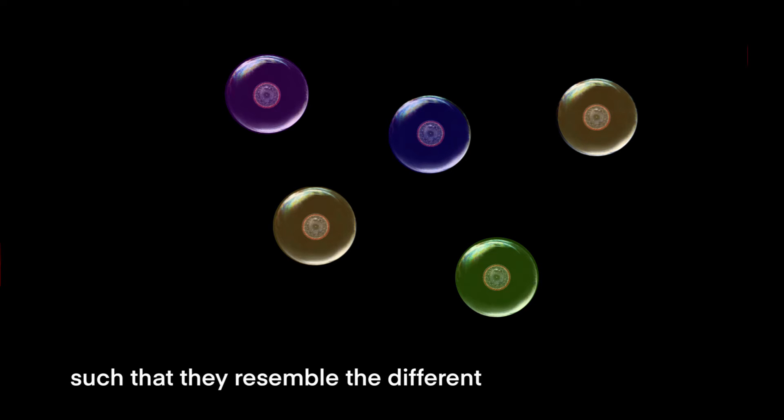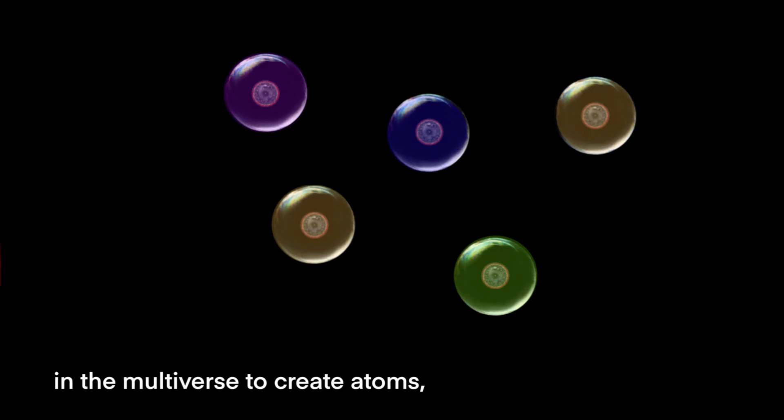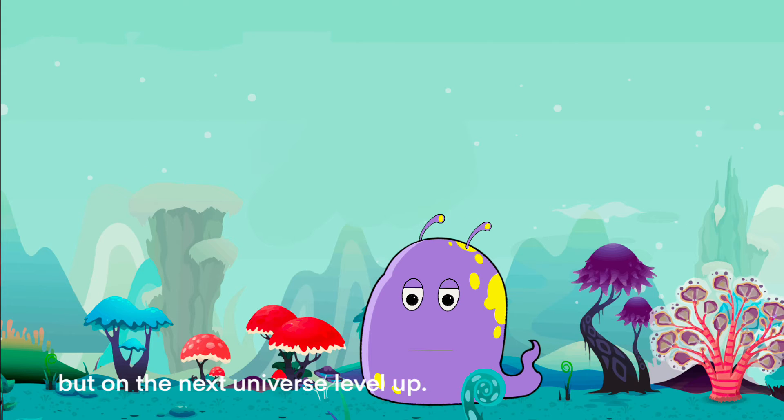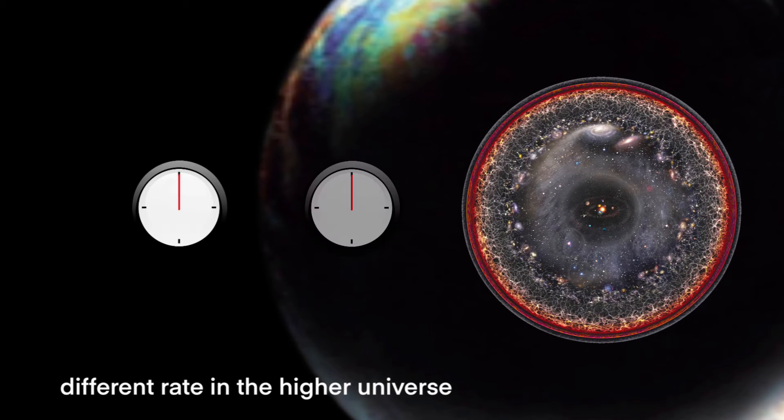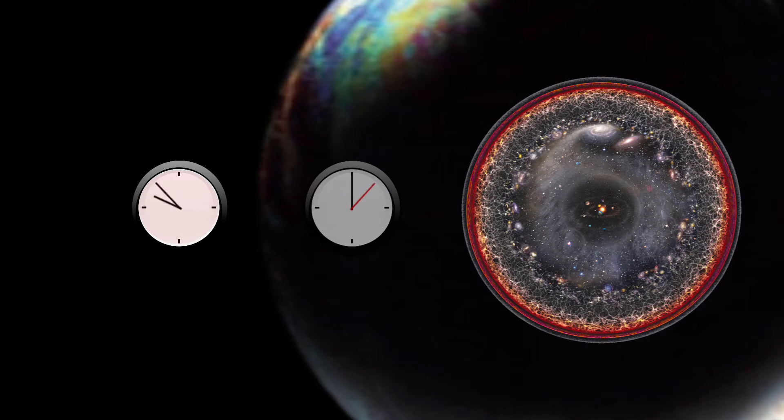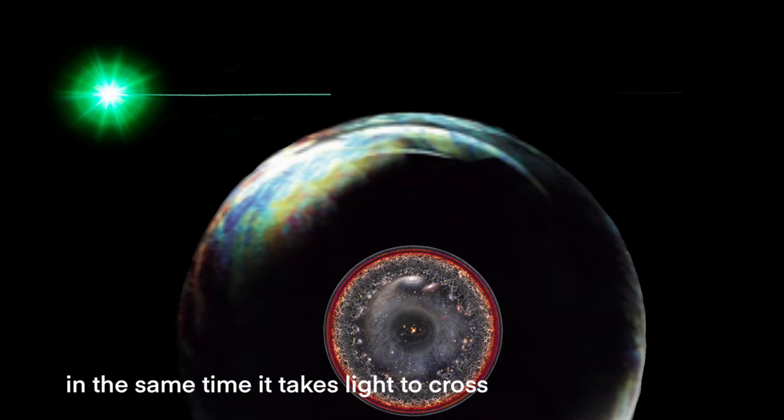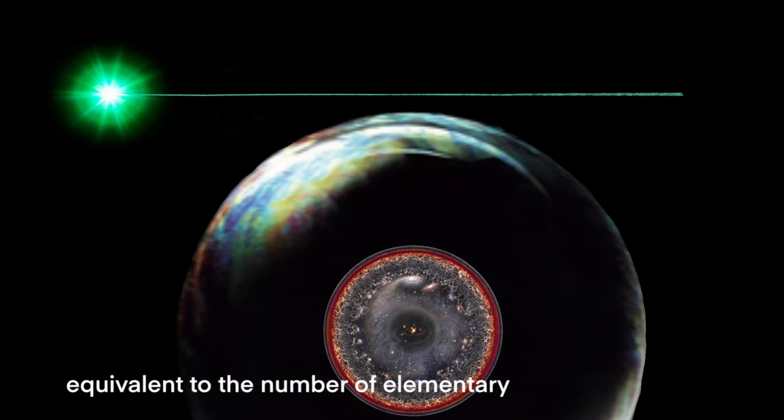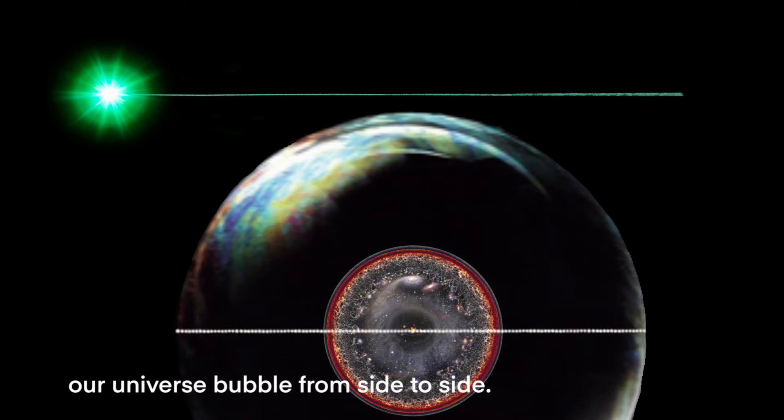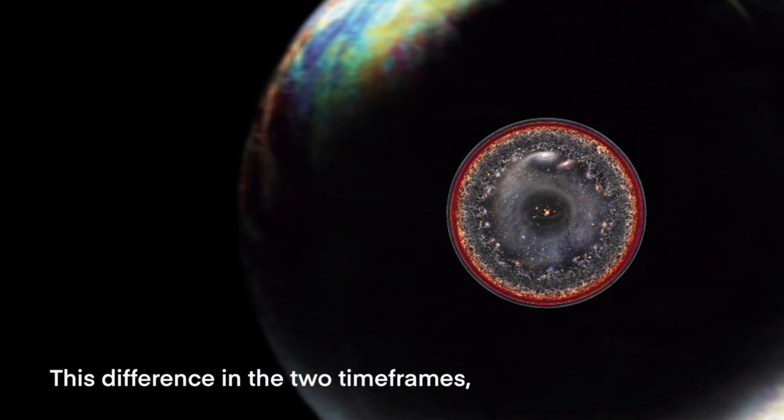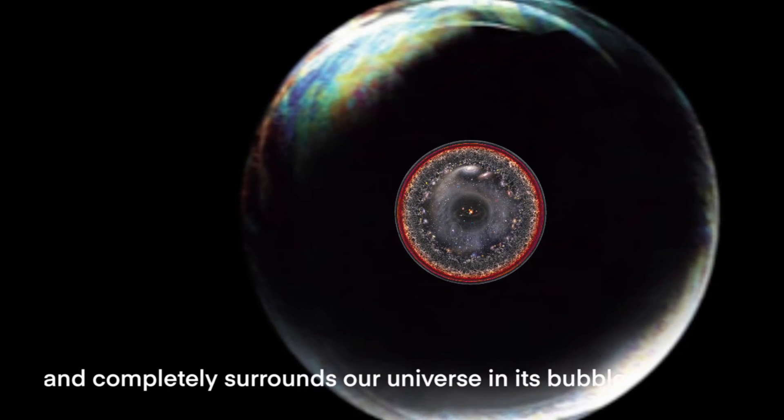Now imagine all those universe bubbles existing together in the multiverse such that they resemble the different elementary particles in our universe. Imagine those universes coming together in the multiverse to create atoms, elements, and molecules, making structures and maybe even creating life, similar to our universe but on the next universe level up. Time could be traveling at a vastly different rate in the higher universe than in our universe. A beam of light could cross our universe bubble in the same time it takes light to cross an elementary particle in our universe. This difference in the two time frames creates a boundary between our universe and the higher universe where the two time frames meet and completely surrounds our universe in its bubble.